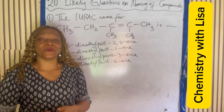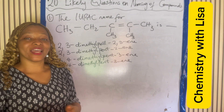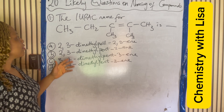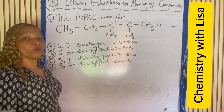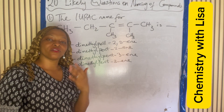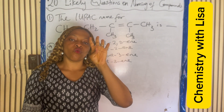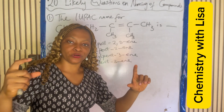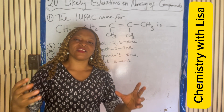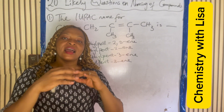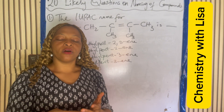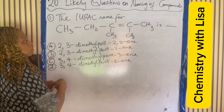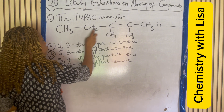The first question asks: what is the IUPAC name for this compound? Remember, there are four steps to naming organic compounds: first, identify the longest continuous carbon chain; second, identify the functional groups; third, identify the substituents if available; and fourth, number using the least possible number.